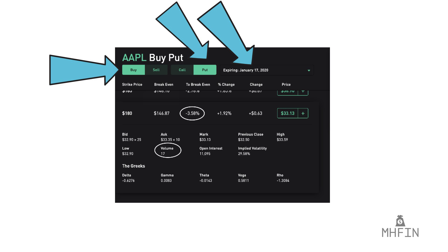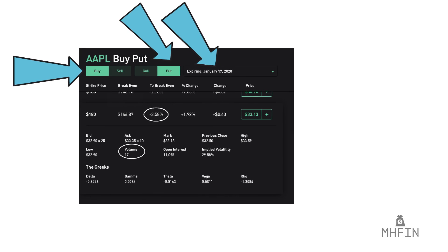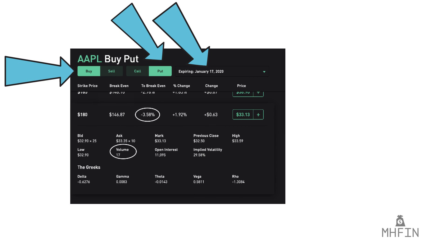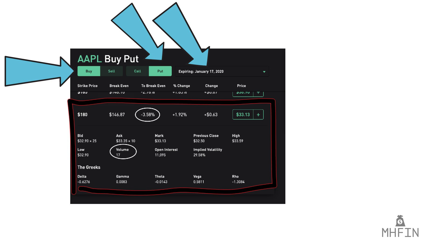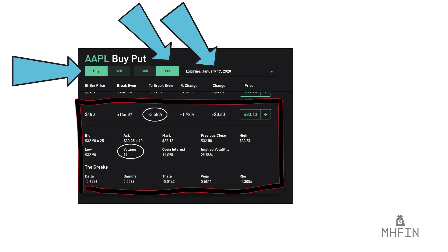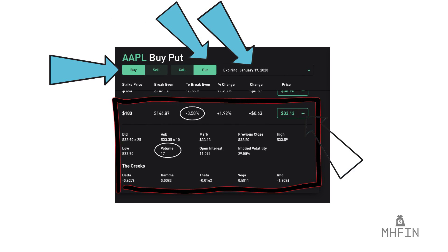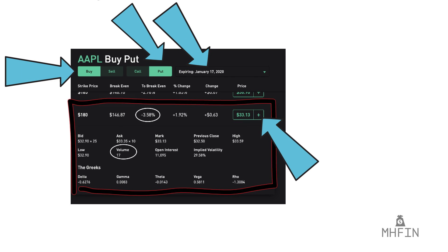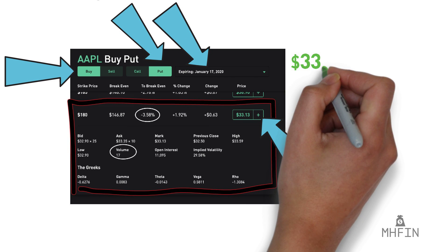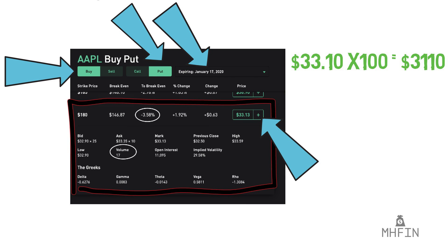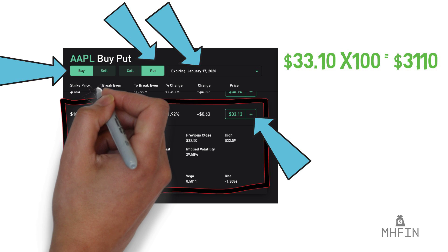The expiration date is incredibly important in that it is the date by which the Apple stock needs to fall in order to profit. The further out this date, the more expensive the option in general. Now we are going to select the $180 strike price, which is priced at $33.10. To understand how much we are truly paying per contract, we multiply this number by 100, which brings our total to $3,110 per contract.